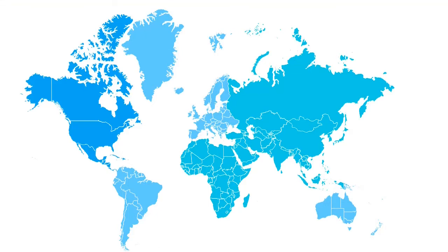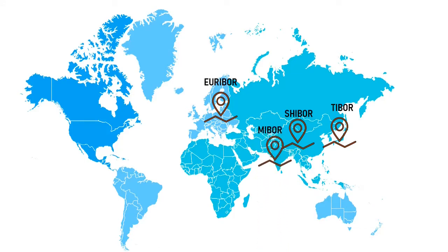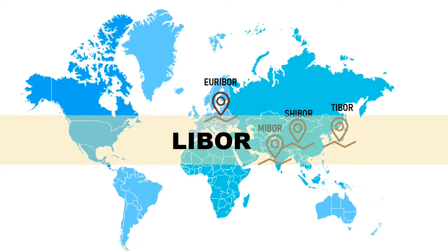Are there any other benchmarks like LIBOR? Of course, yes. Europe has the European Interbank Offered Rate, called EURIBOR. Japan has the Tokyo Interbank Offered Rate, which is TIBOR. China has the Shanghai Interbank Offered Rate, which is SHIBOR. And we have our own Mumbai Interbank Offered Rate, that is MIBOR. However, LIBOR finds global acceptance and is therefore the most commonly used benchmark for pricing of instruments.